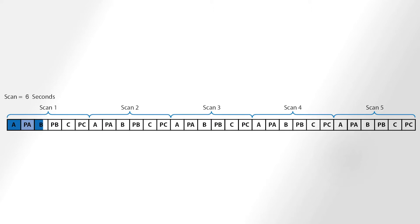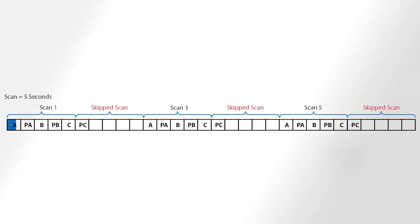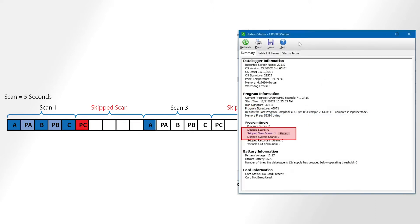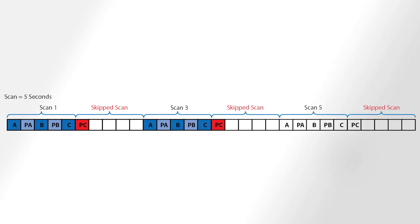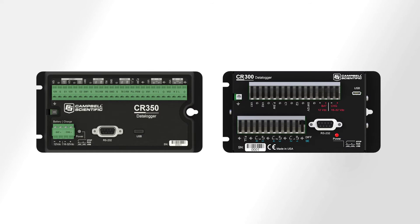If we remove the idle time in the scan, the fastest this set of measurements and processing could run in sequential mode would be a scan rate of six seconds. We are using seconds in our example, but Campbell Scientific data loggers can run much faster, at sub-second intervals. Trying to run the scan any faster in sequential mode would result in skipped scans, or you could get a skipped scan if the occasional processing task takes longer than you've accounted for. Check to see if there are any skipped scans by viewing the station status in PC400 or in the LoggerNet Connect screen. It should be noted that the CR350 and CR300 series data loggers always run in sequential mode.